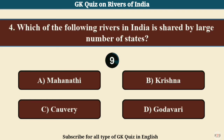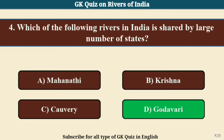Question No. 4. Which of the following rivers in India is shared by the largest number of states? Answer D: Godavari.